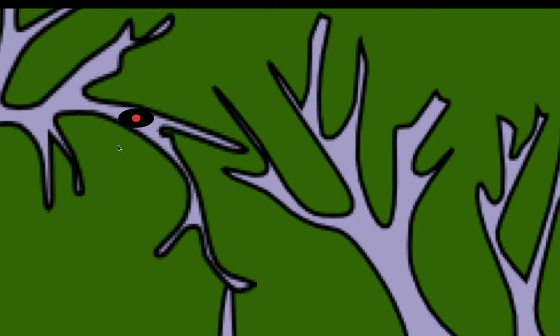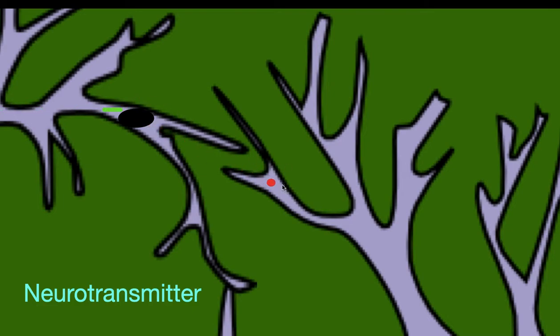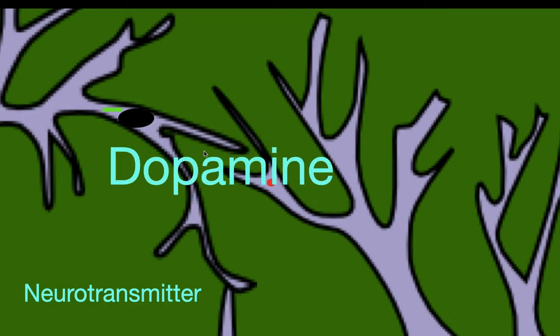The electrical signal won't be able to go through the gap, so we need a chemical messenger called a neurotransmitter. Over here we have a vesicle — this red circle is the neurotransmitter, and there will of course be more than one. The electrical signal will trigger the neurotransmitter to travel to the dendrite of the postsynaptic neuron, attach to receptors, and be converted into an electrical signal. One of the most famous neurotransmitters is dopamine, and we'll be talking a lot about dopamine.